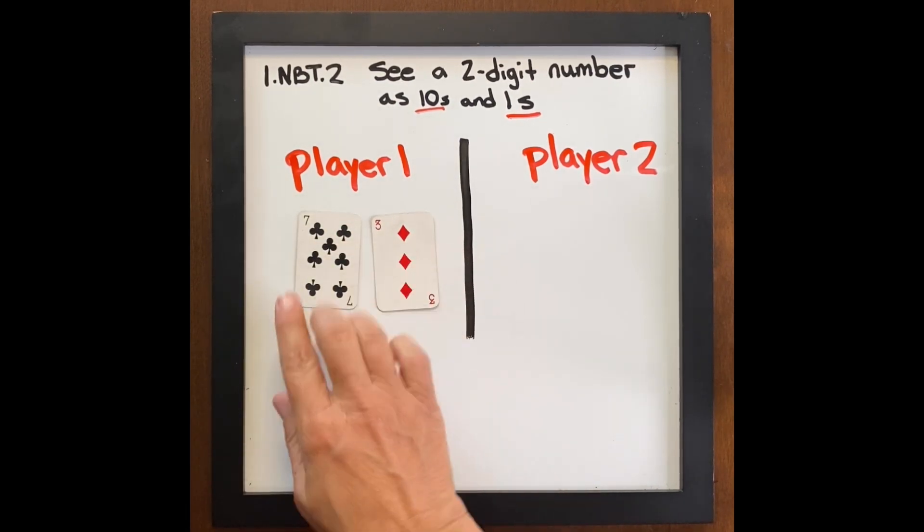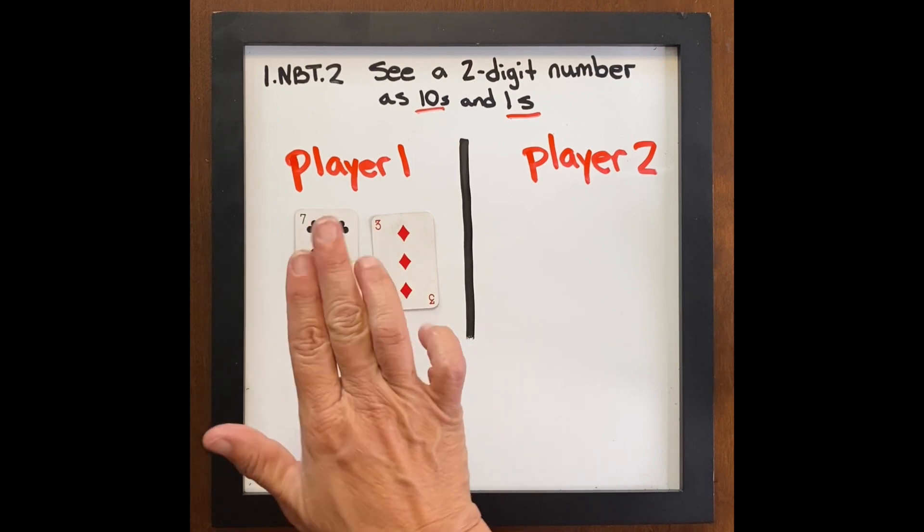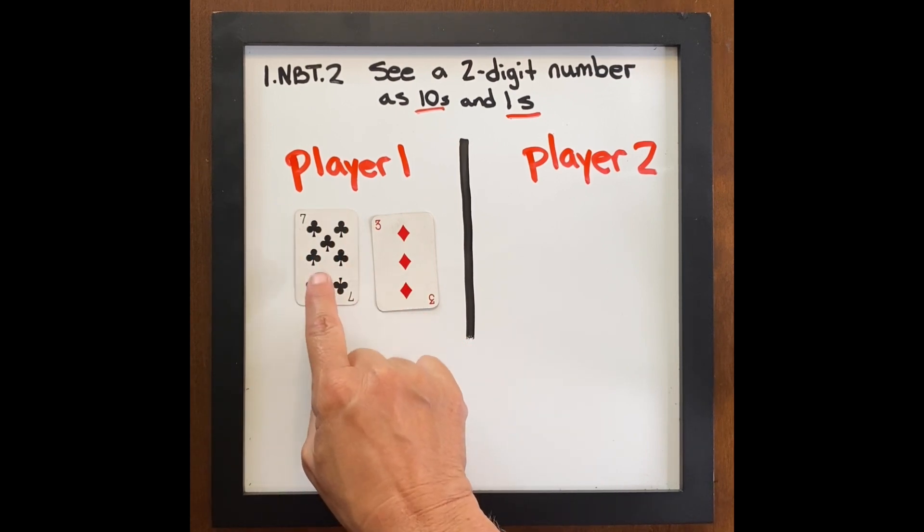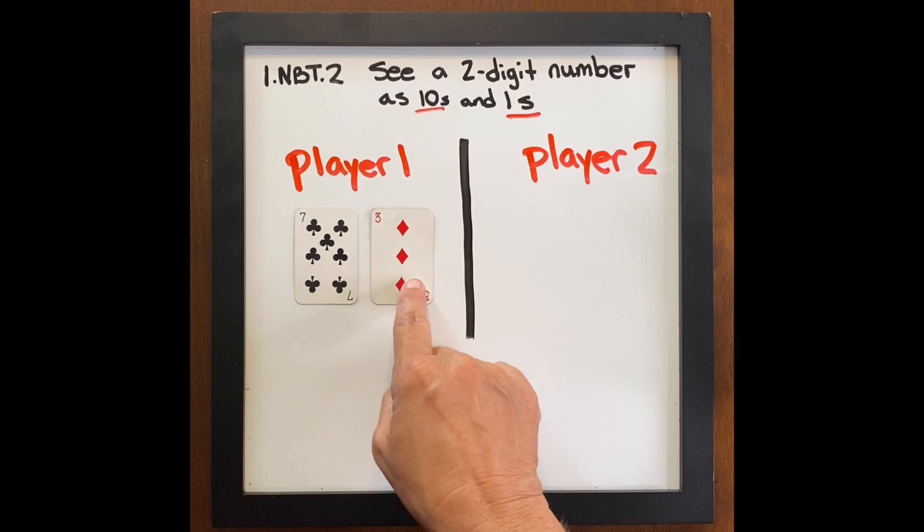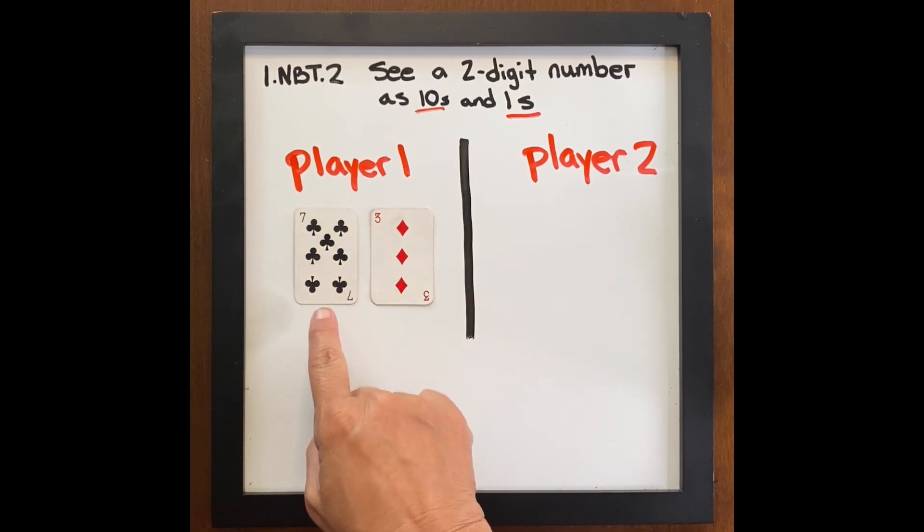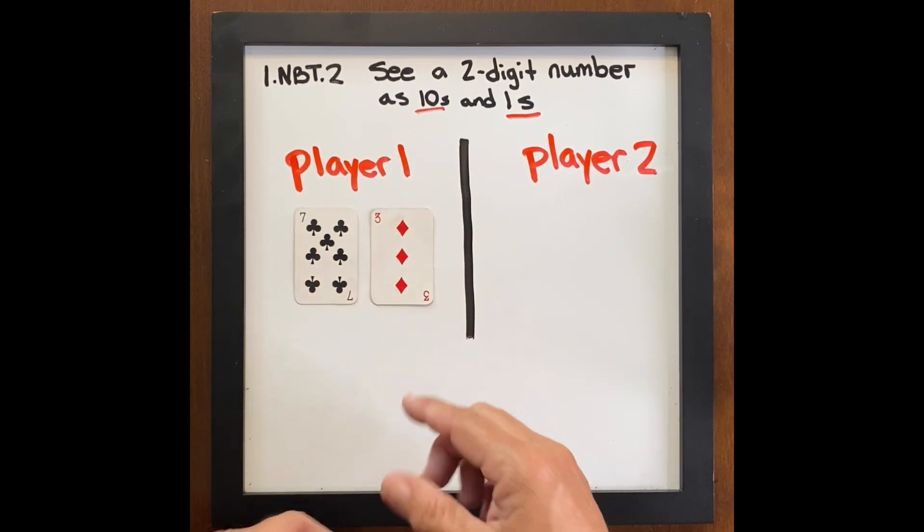So here, player one may not move their cards. Whatever number is drawn first is their tens, and their second number is their ones. So player one drew seven tens, three ones, 73.